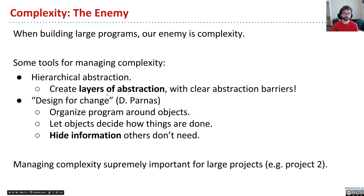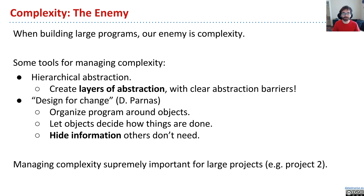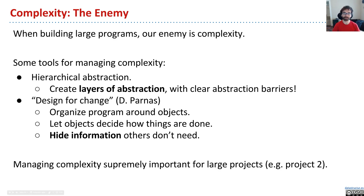There are a bunch of different tools for managing the complexity of something we're trying to build. One of them is hierarchical abstraction. Whenever you build something truly huge, it's very important that you have layers of abstraction so that somebody who wants to use a list doesn't need to know about the fact that there's an array under the hood. That's something familiar and something you didn't spend too much time fretting about in Project 1A. However, moving forwards, we're going to go to scales much bigger than Project 1A and 1B on Project 2, and that's where these ideas will be super important.